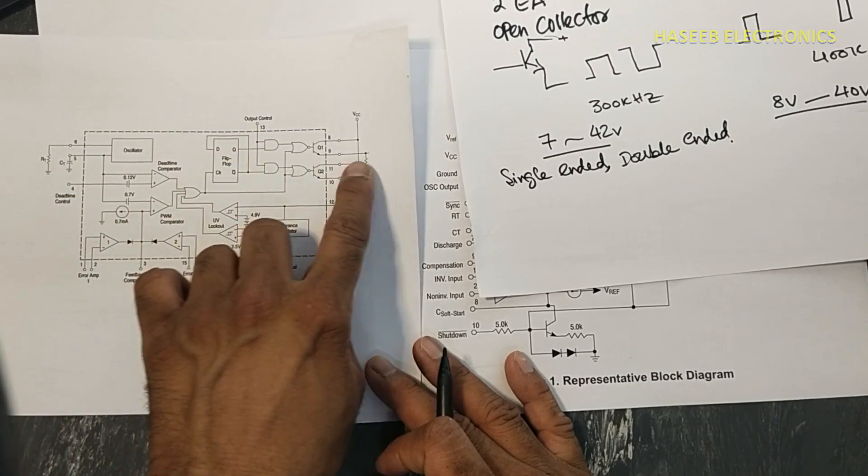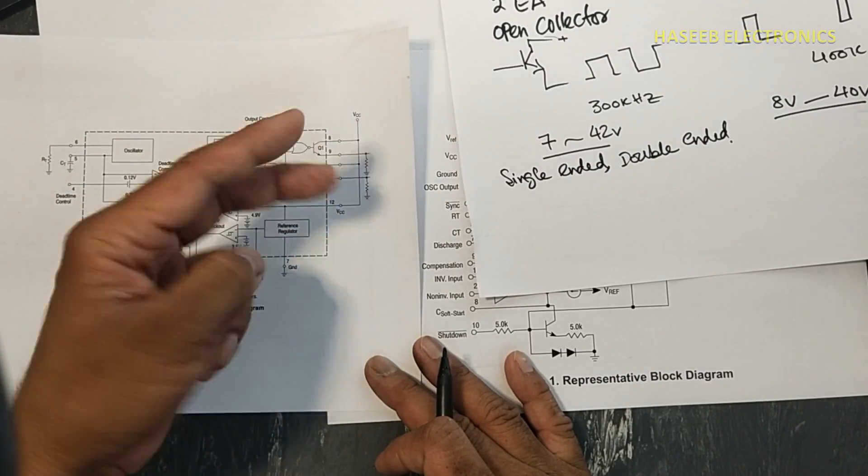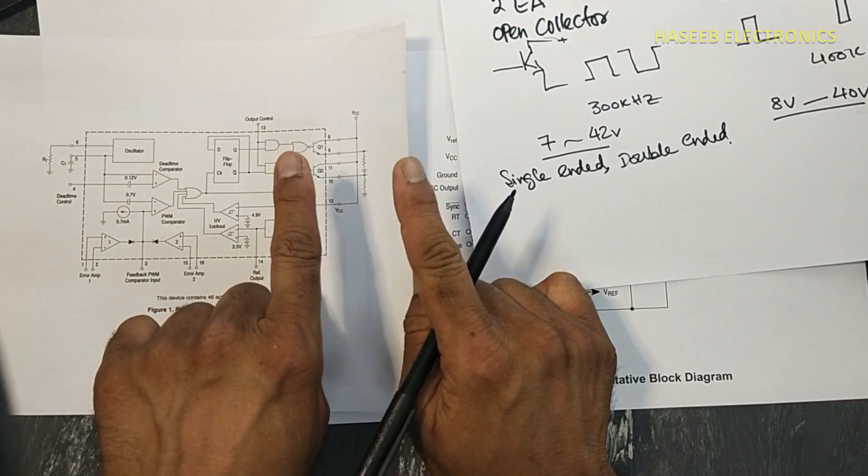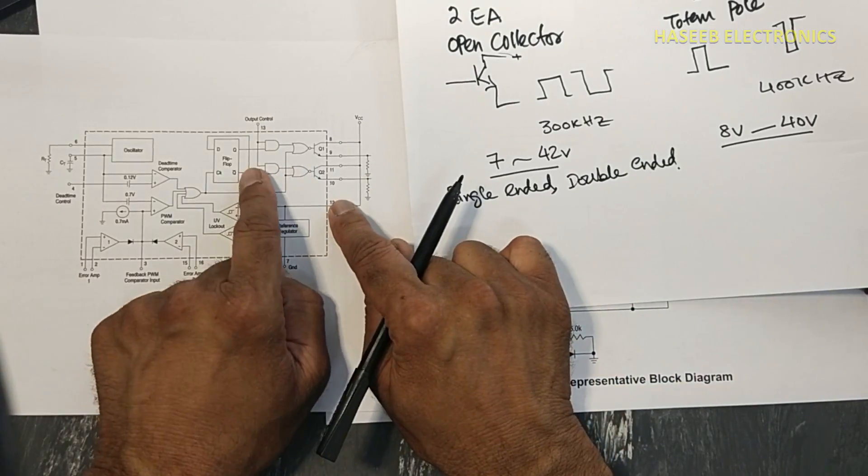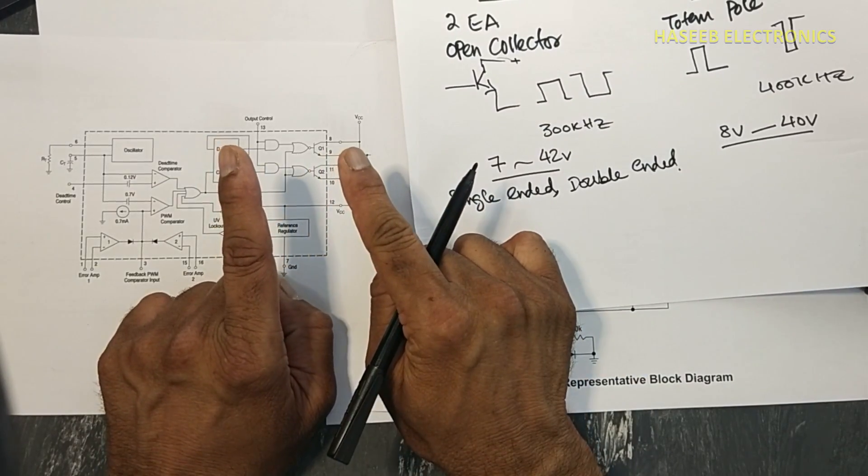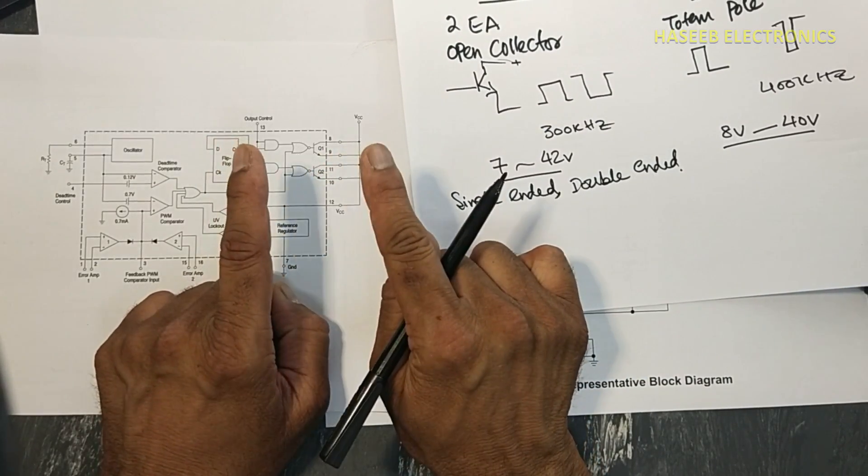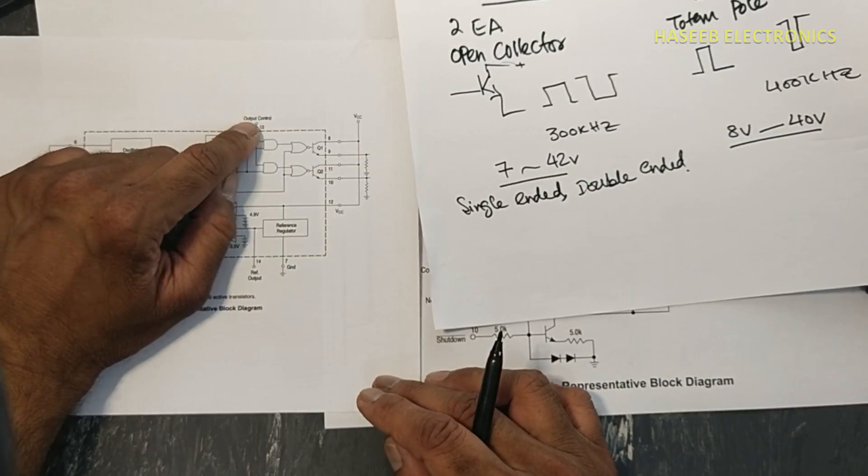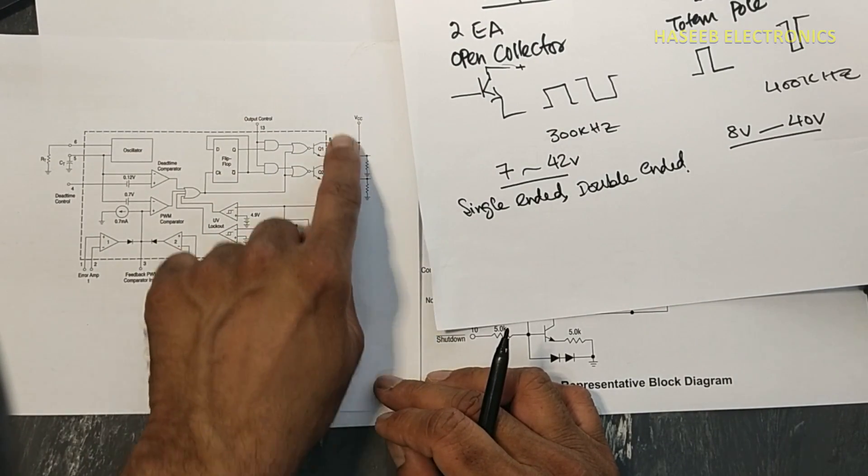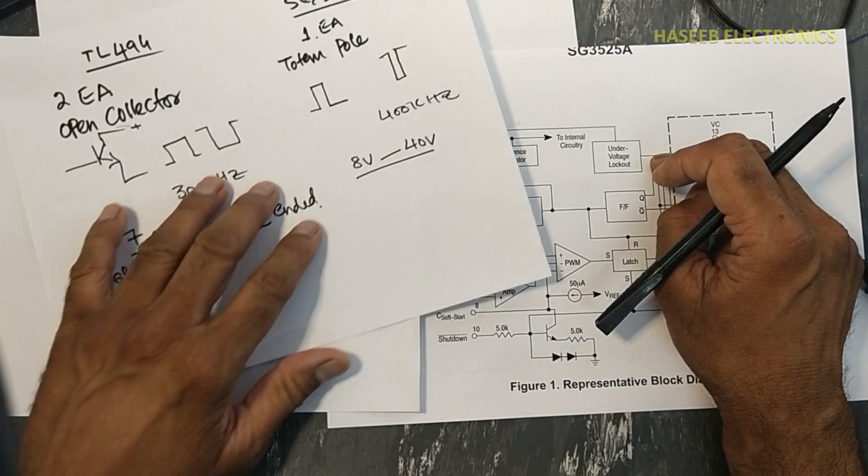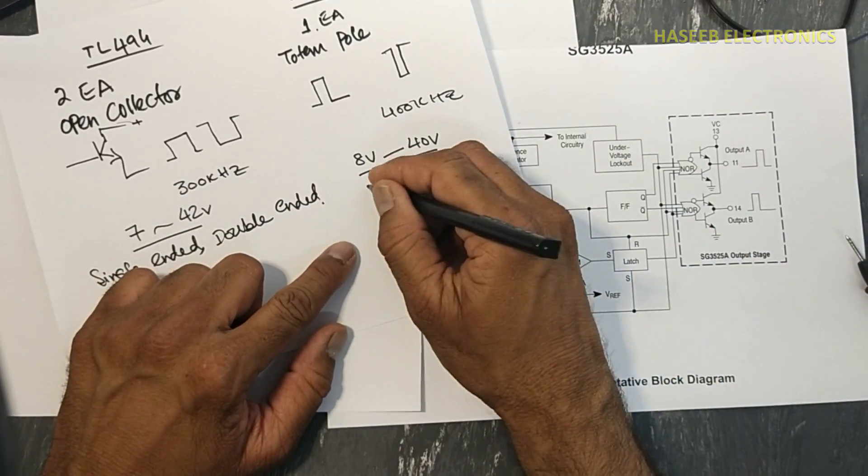If pin number 13 is connected to reference voltage, 5 volt, at that time this IC will start in push-pull double ended operation. Both transistors will work opposite to each other, so we can use this IC as push-pull. We can say two MOSFET drive. If pin 13 is grounded, it will drive one transistor, but at that time its drive current will increase. But here SG3525, it will drive only push-pull.